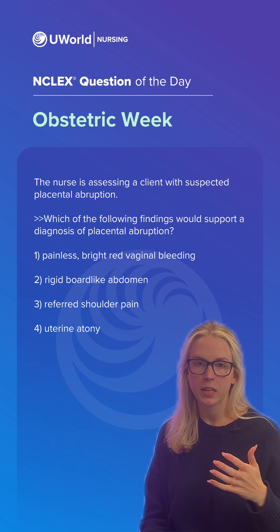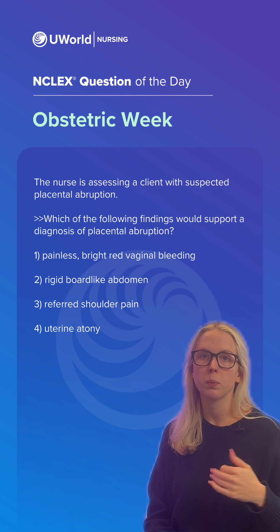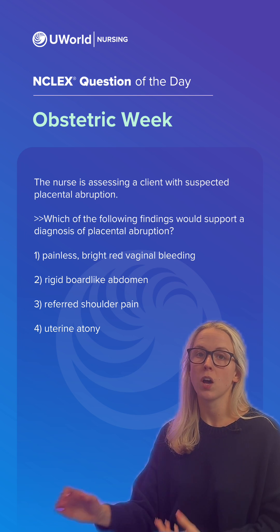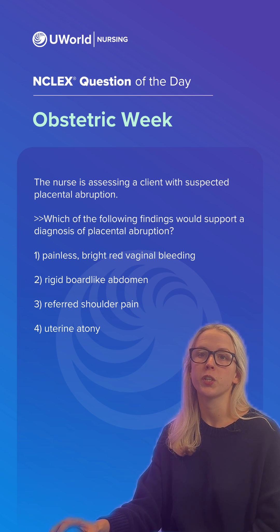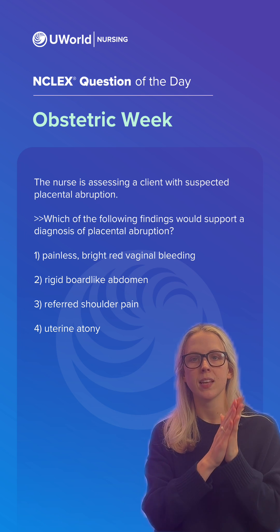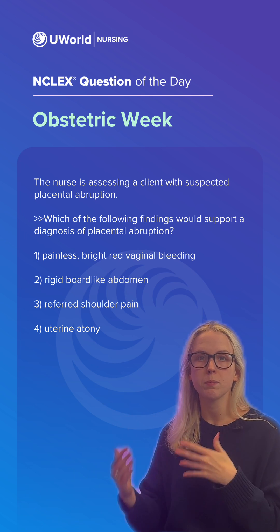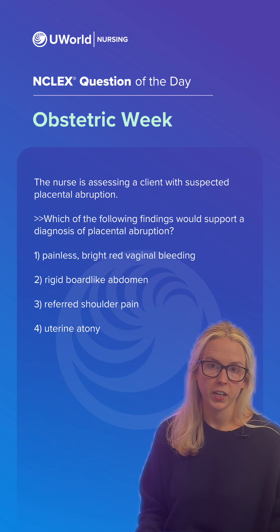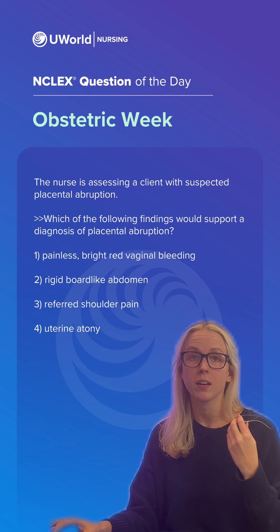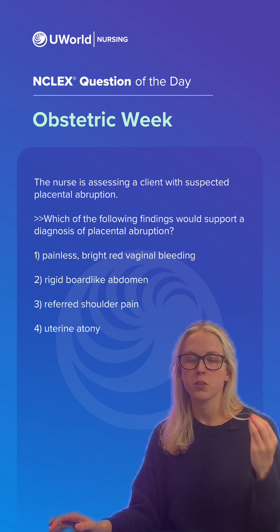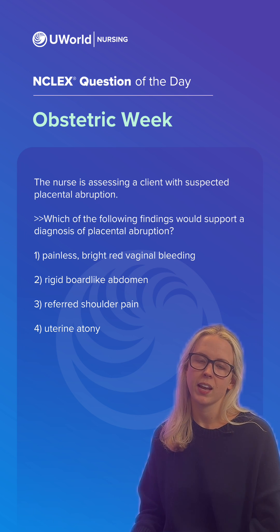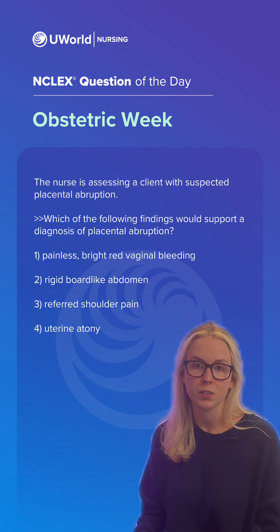Pause the video, drop your answers into the comments below, and I'm going to jump right into our rationale. Our correct option is option number two. Placental abruption is separation of the placenta from the uterine wall. The symptoms will vary depending on the severity of the abruption — it can be partial or it can be complete. In this case, option two, that rigid board-like abdomen is a hallmark sign of placental abruption.